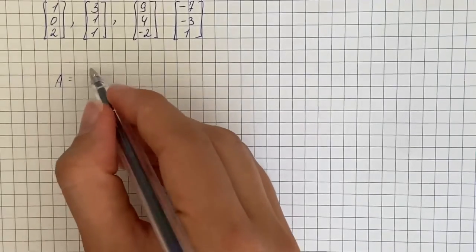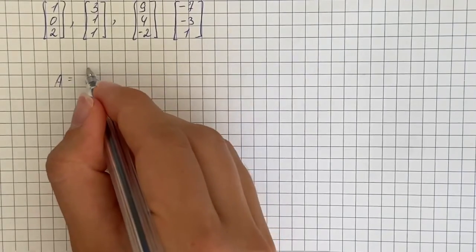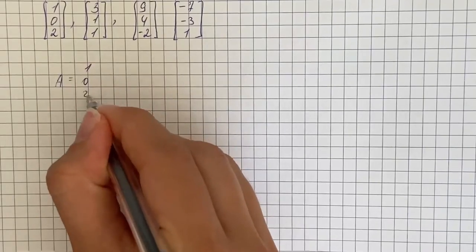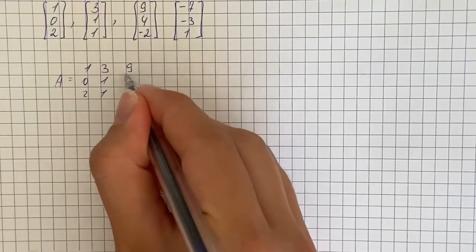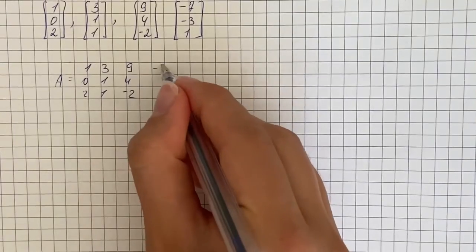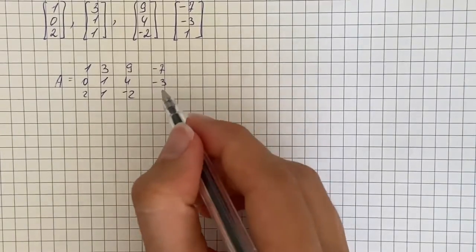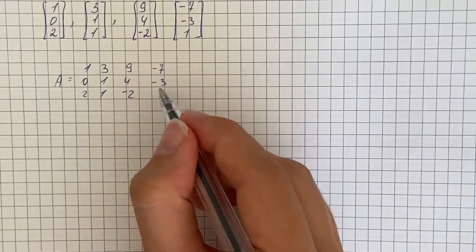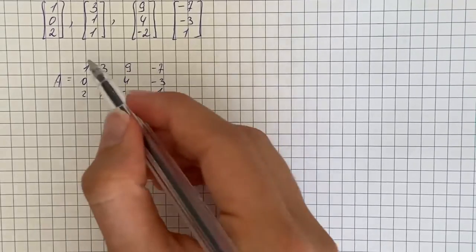So that's going to be 1, 0, 2. And then we're going to perform reduced row echelon form on it.